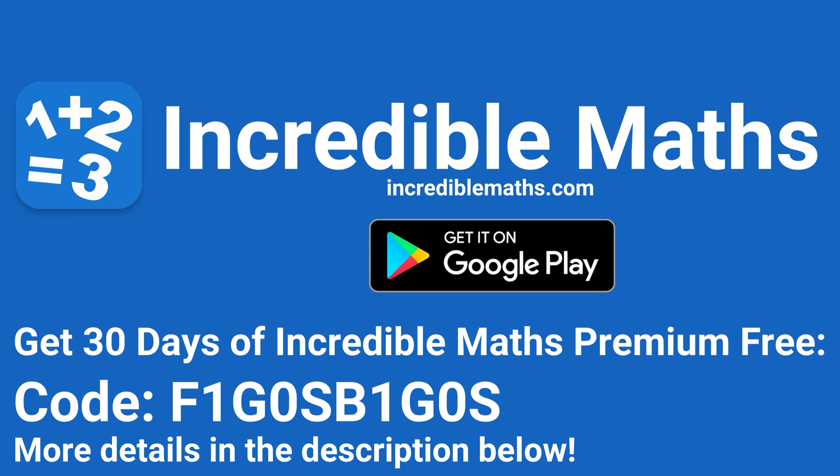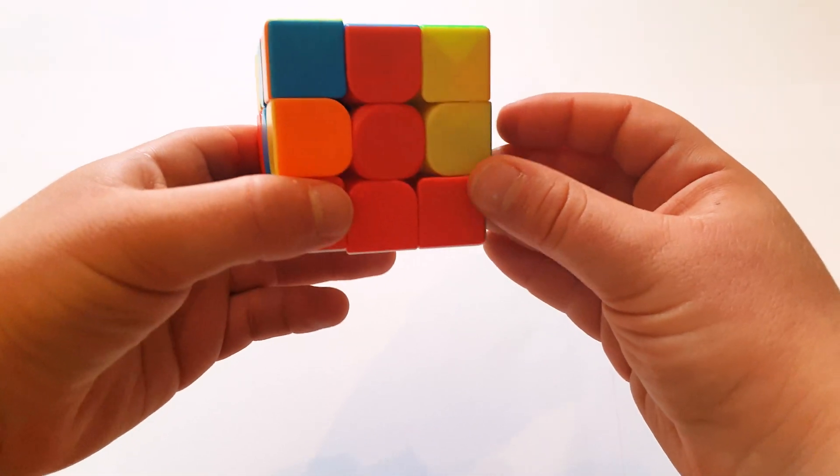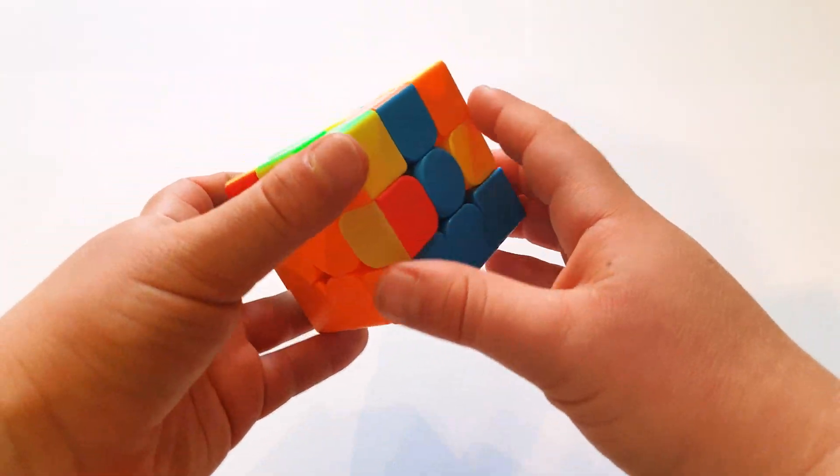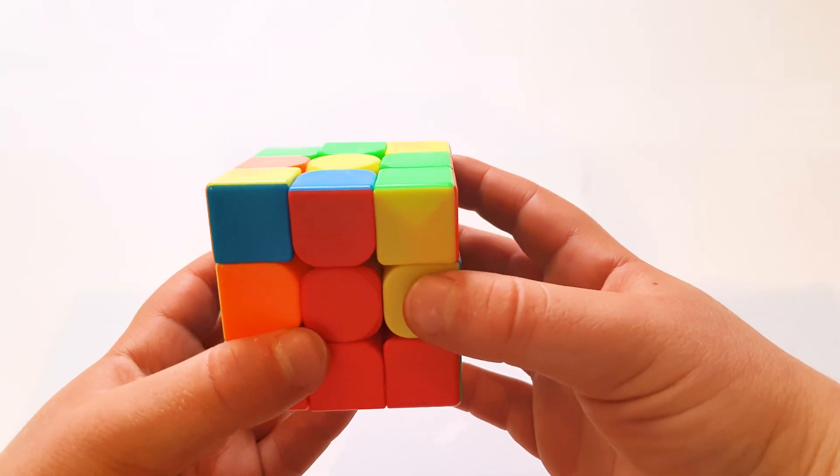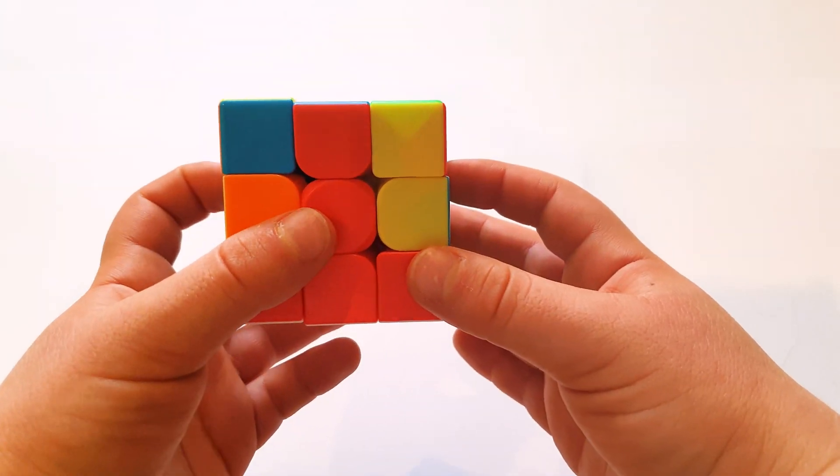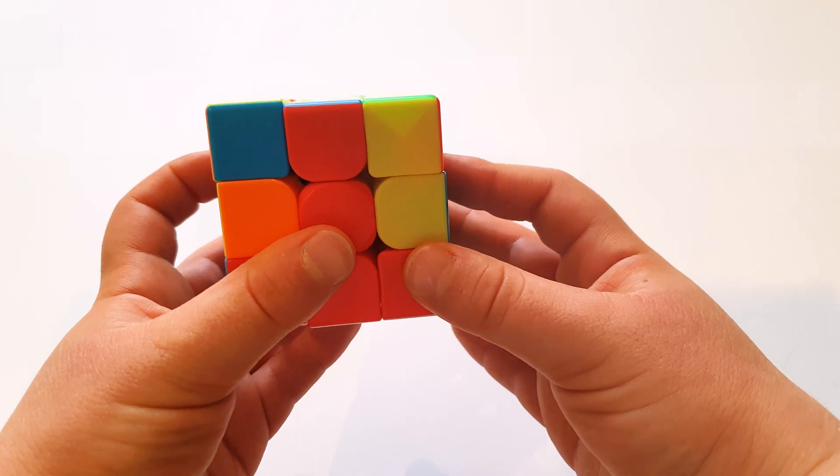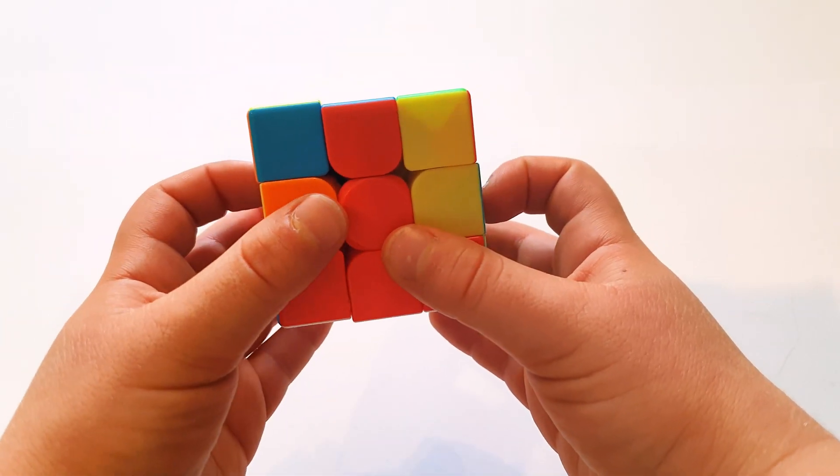Now let's get back to the video. The next step is to solve the middle layer. This is the hardest step because there are two algorithms and you might get mixed up. So I'm going to call them the left one and the right one.